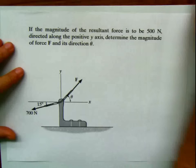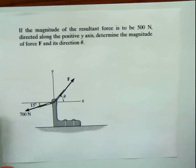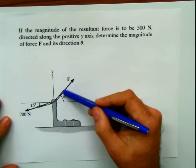The first problem I want to work with you says: if the magnitude of the resultant force is to be 500 Newtons, directed along the positive y-axis, determine the magnitude of the force F and its direction — this angle here, not the direction angle, this angle here.